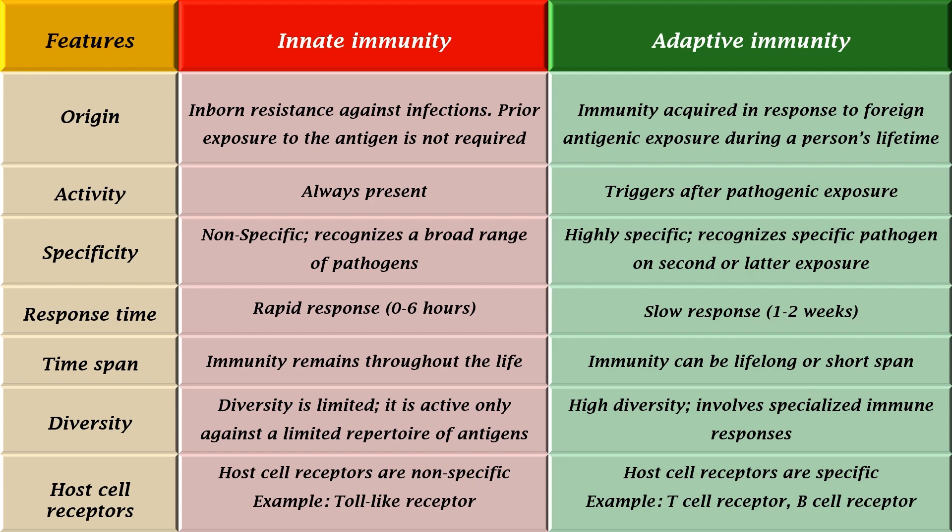Innate immunity is always present, and it is nonspecific, and can recognize a broad range of pathogens. Adaptive immunity is triggered after exposure to pathogens. It is highly specific and recognizes specific pathogens on later exposure.